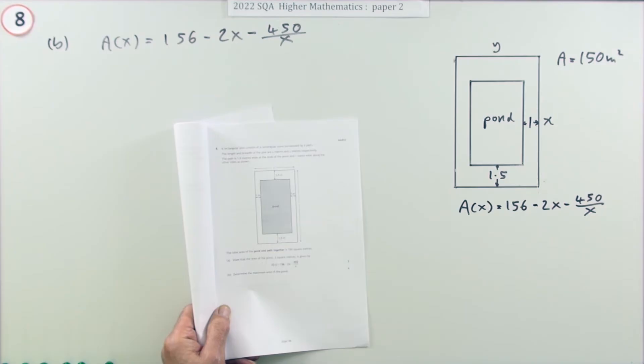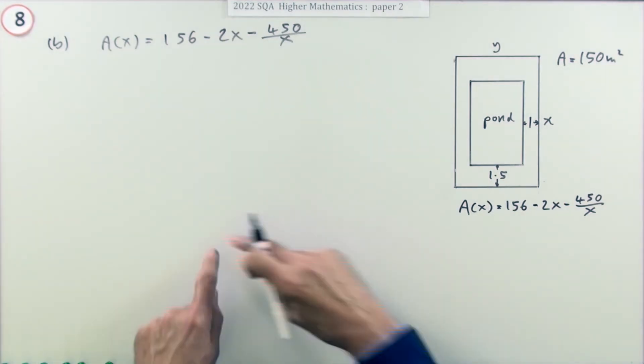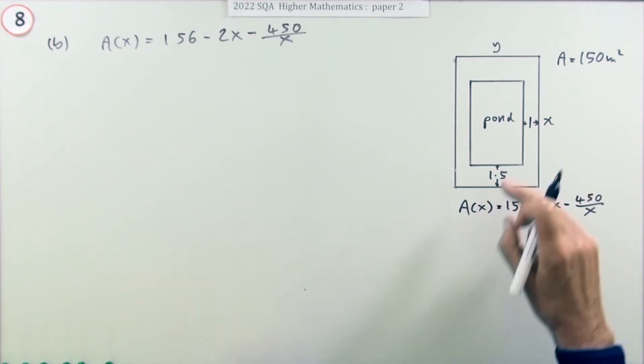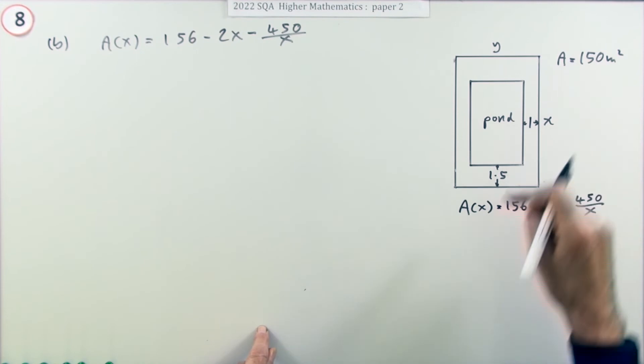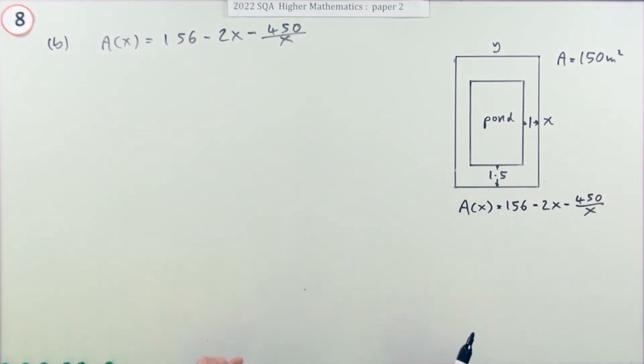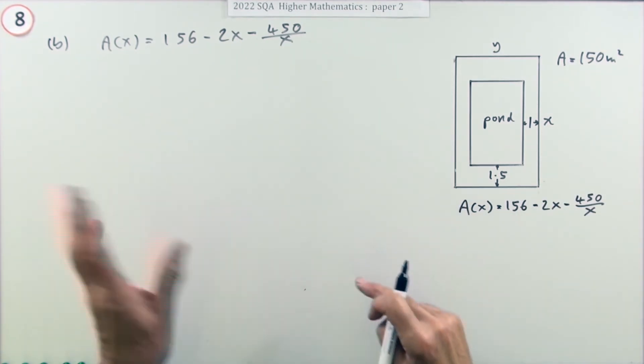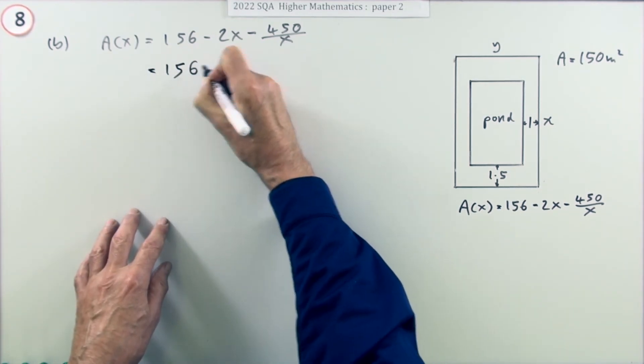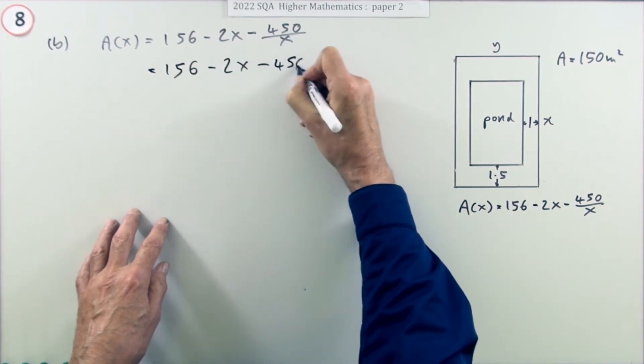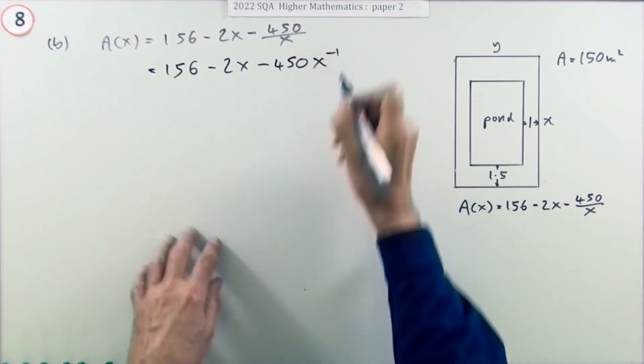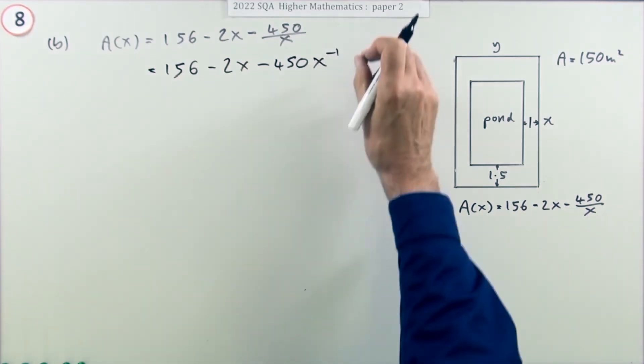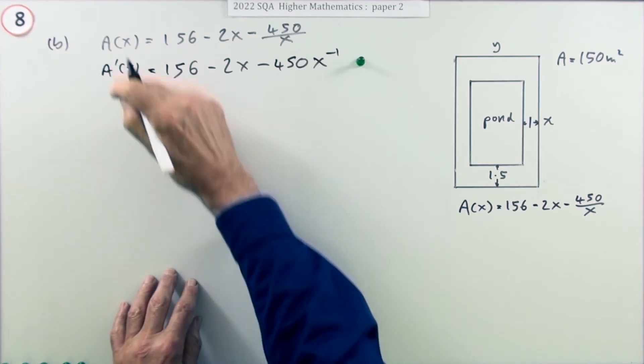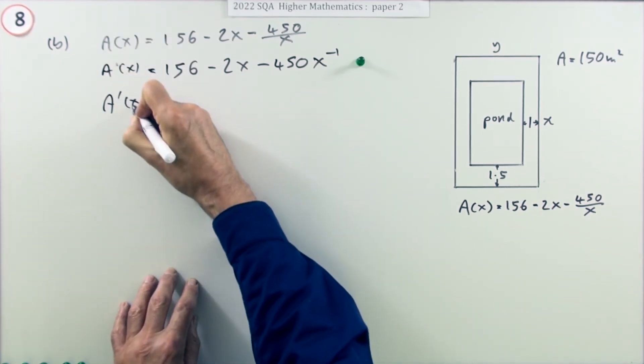Part B: determine the maximum area of the pond. Unless the area kept increasing all the time, which you can't do because there's a fixed area of 150 for the whole lot, there must be some point where it reaches a maximum. The first step is you have to differentiate. If you're going to be differentiating, you want it in a form suitable for differentiation, so pop that up as power negative one. Doing that gets a mark.